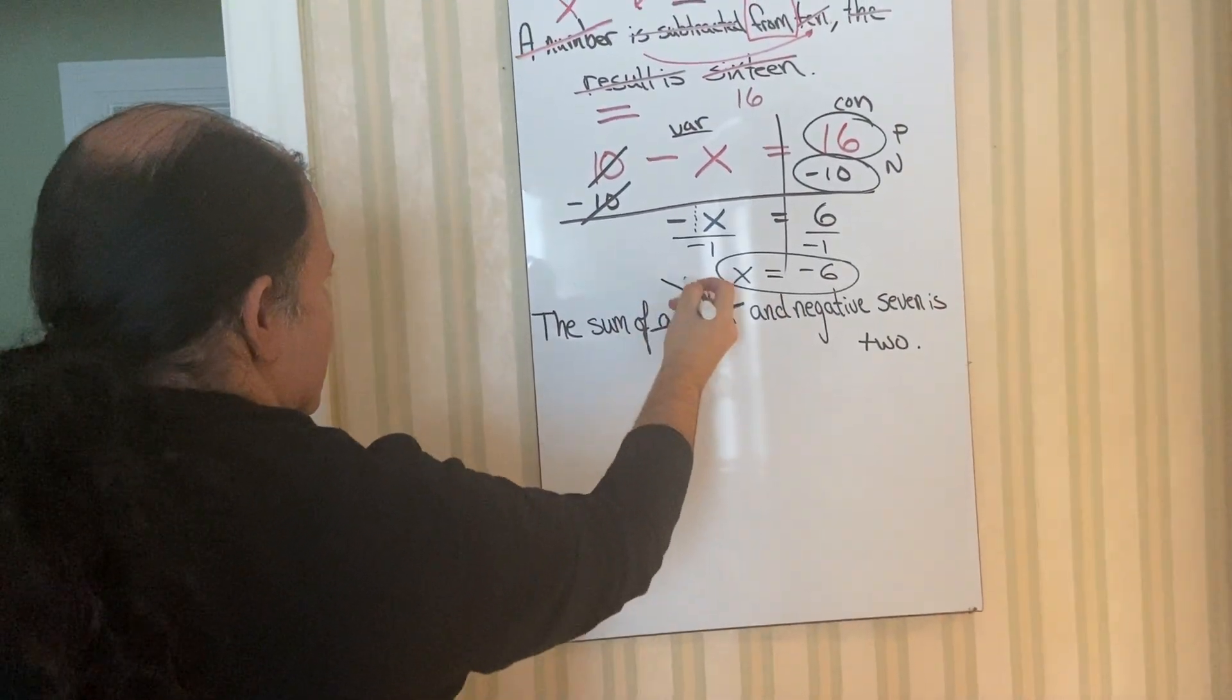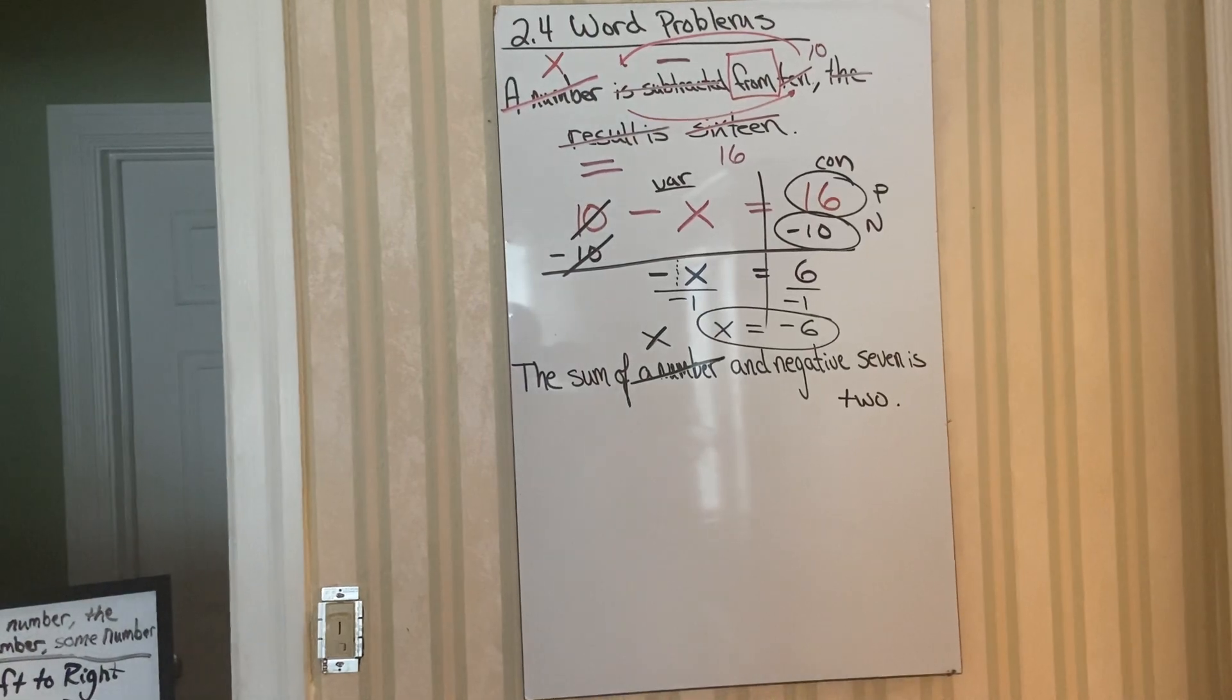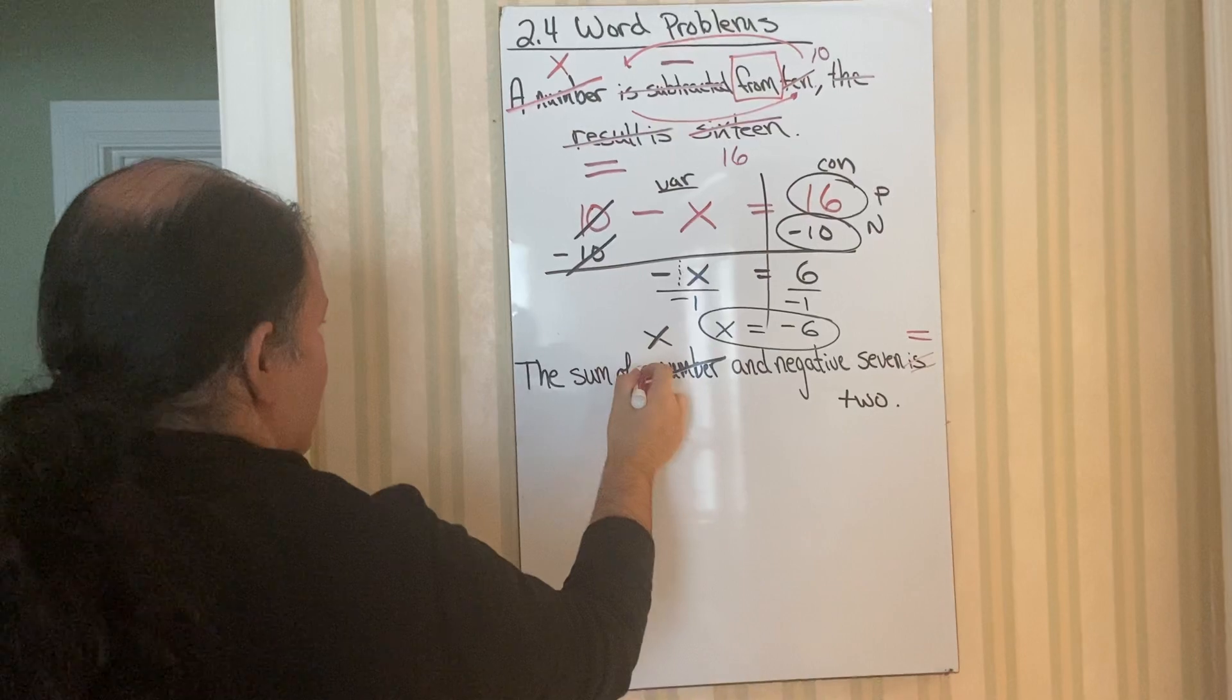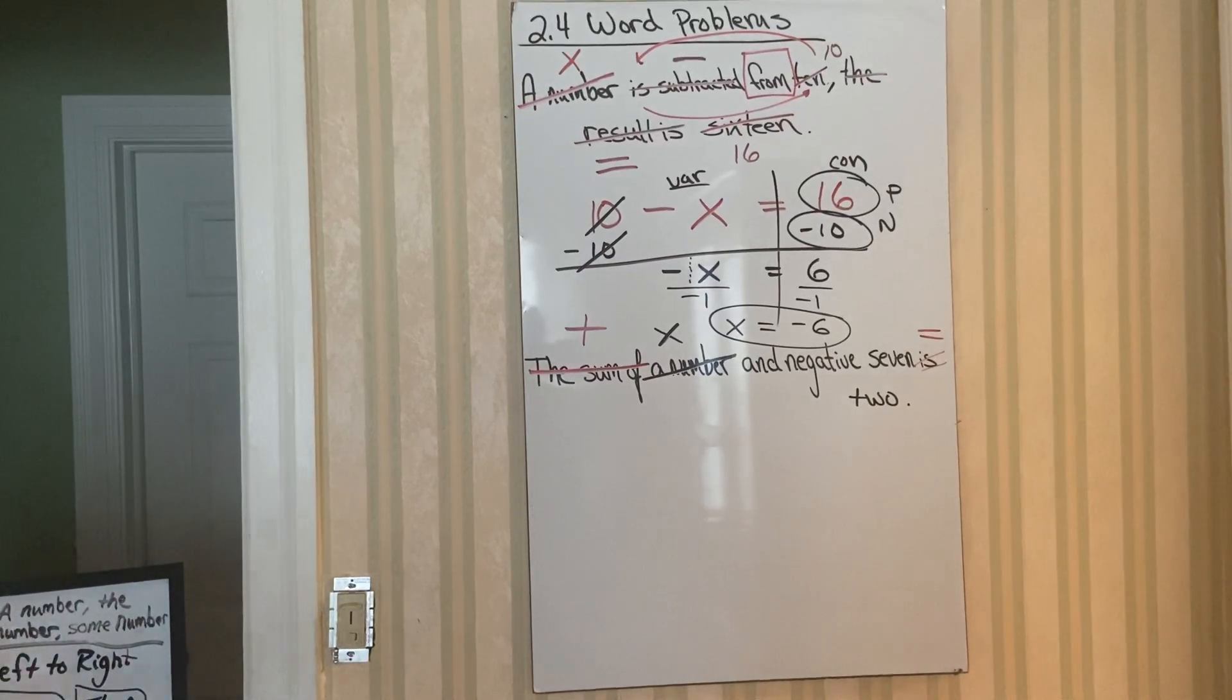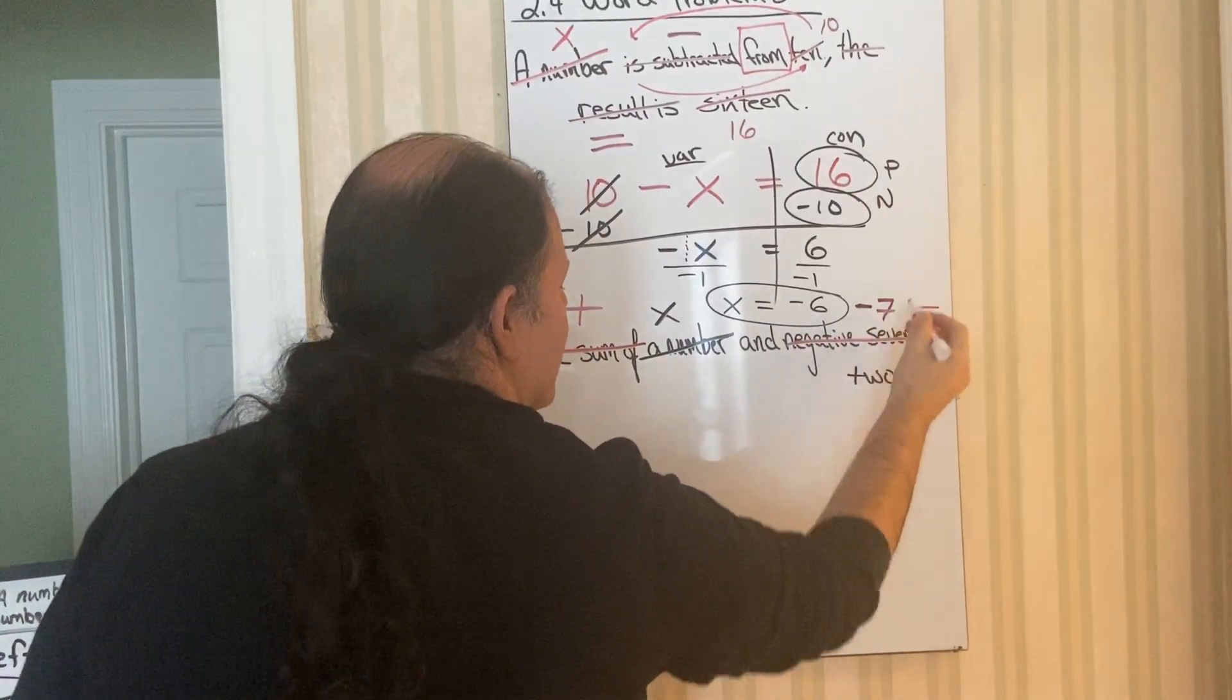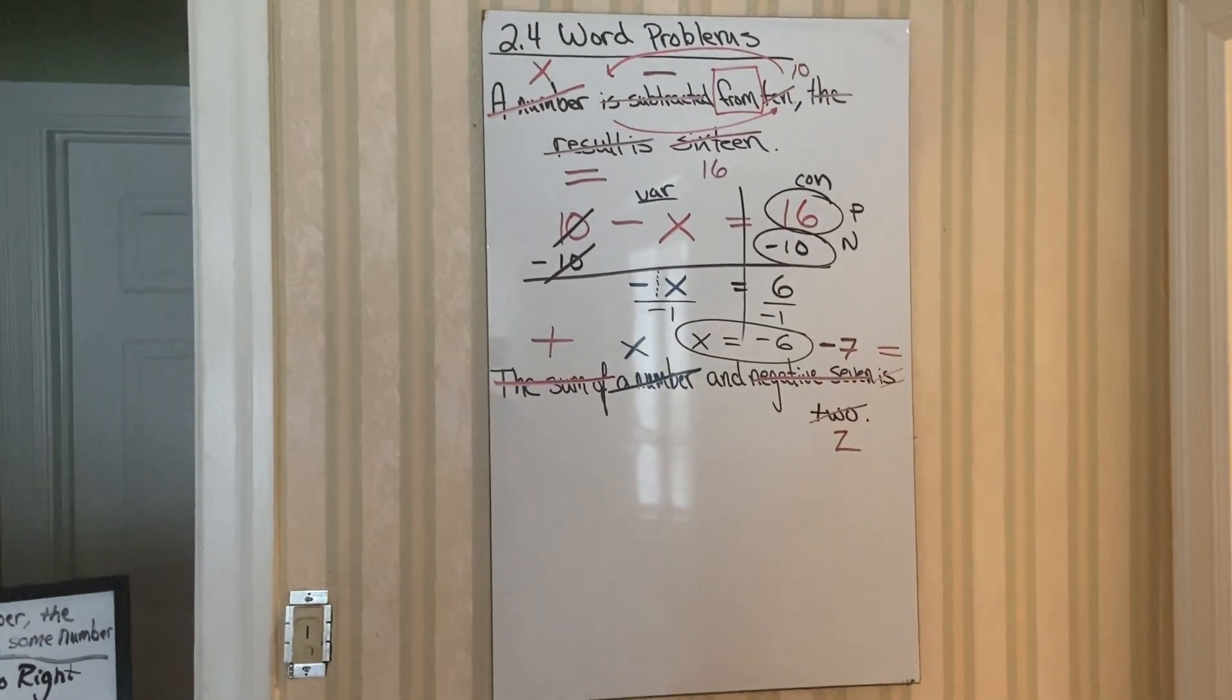That's going to become the letter X. Then next, we're going to translate key buzzwords. So do you see anything that would automatically make you think of an operation? Well, is over here is your equal sign. The sum of means we're going to be adding some items. And maybe that negative sign, negative, you can cross out. Because negative 7 written as a number would be just a negative sign and a 7. And if you want to take care of the 2 right now and put it as a digit, you can. So I got rid of most of those key buzzwords.